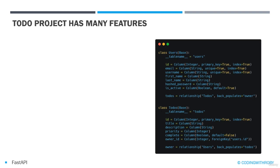The users table will also include a last name, a hashed password using bcrypt encryption, and an isActive column.